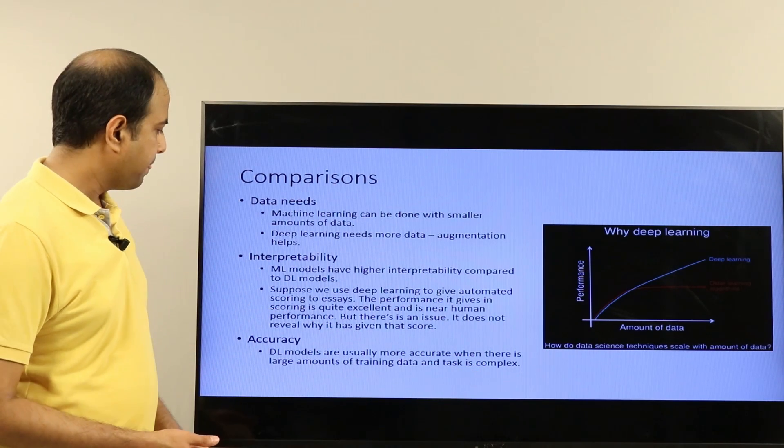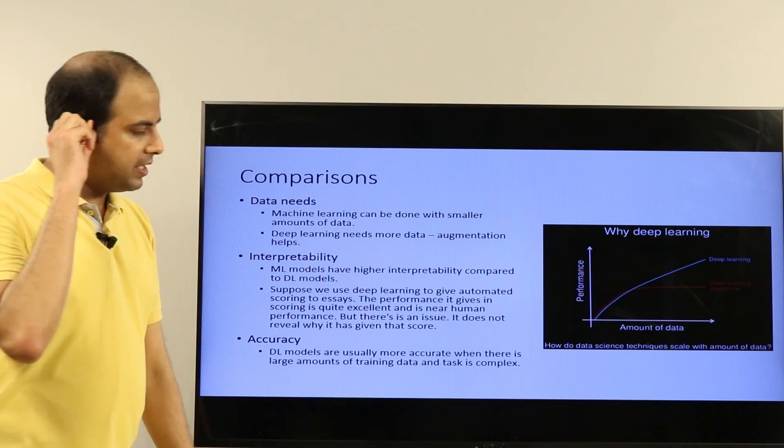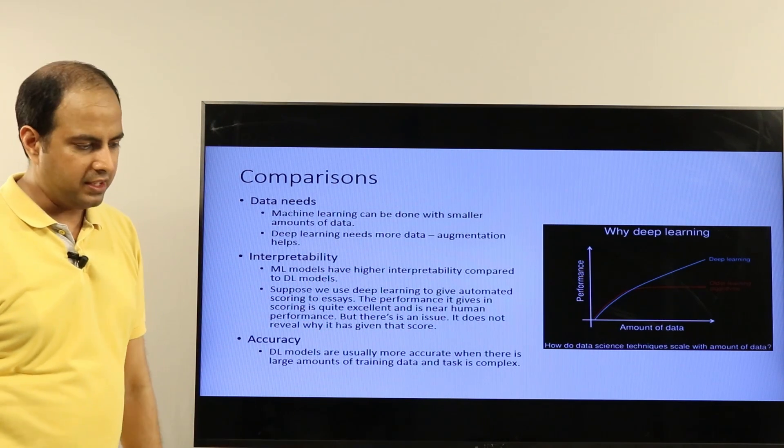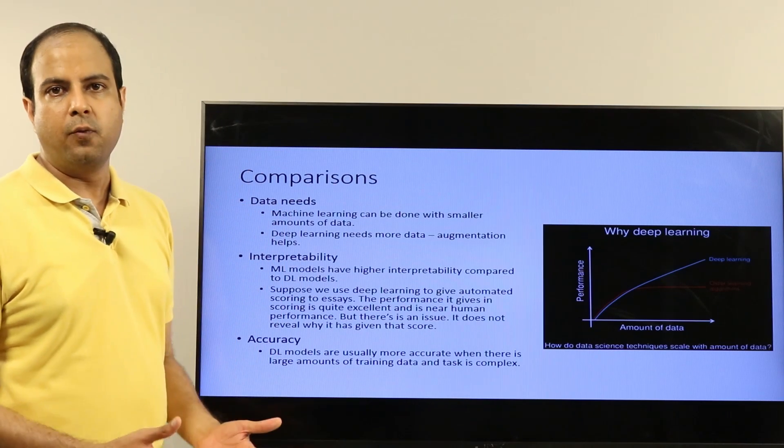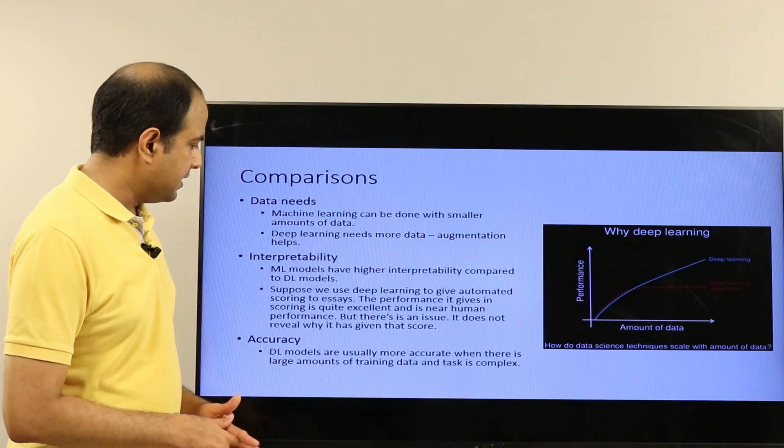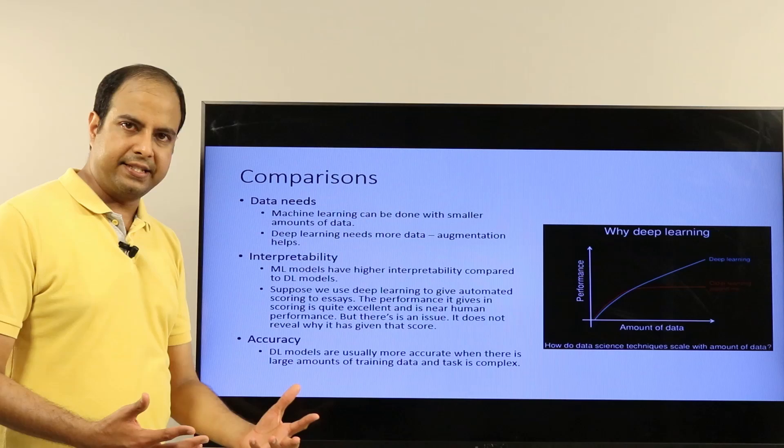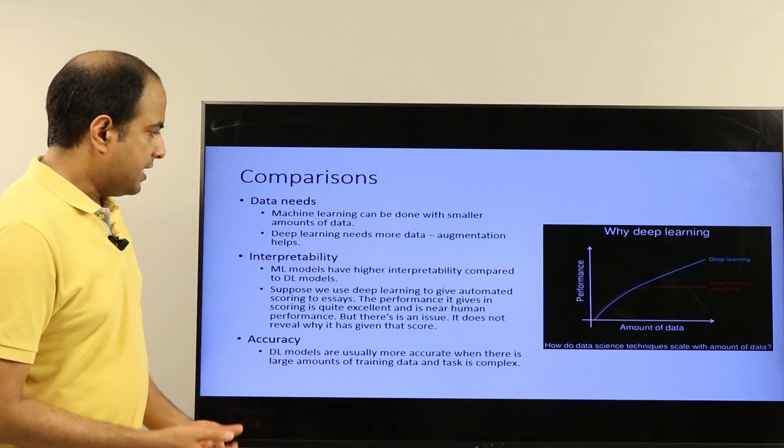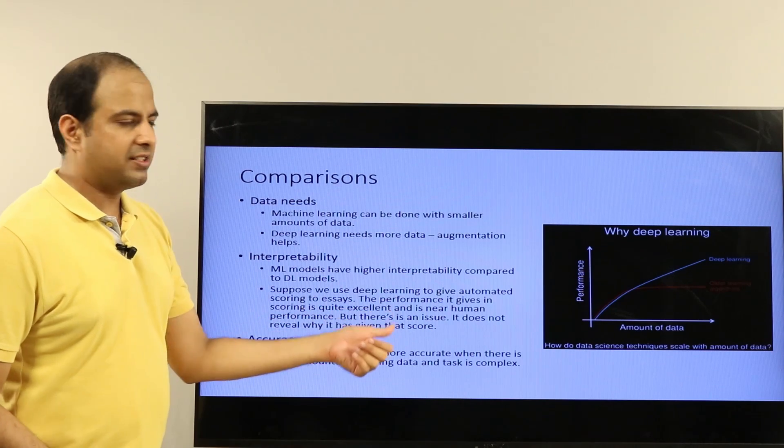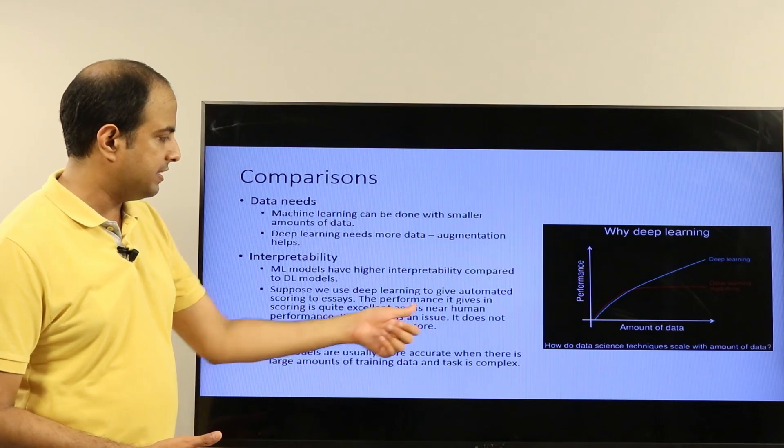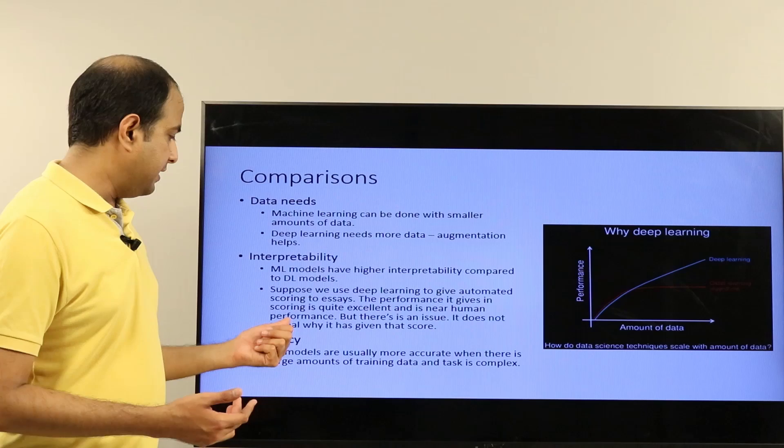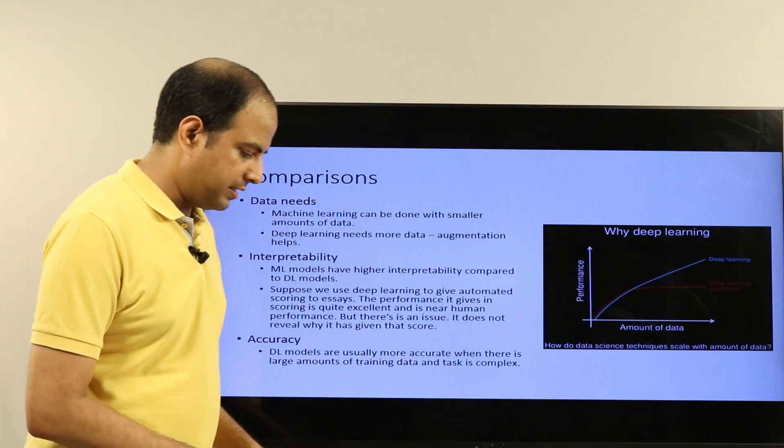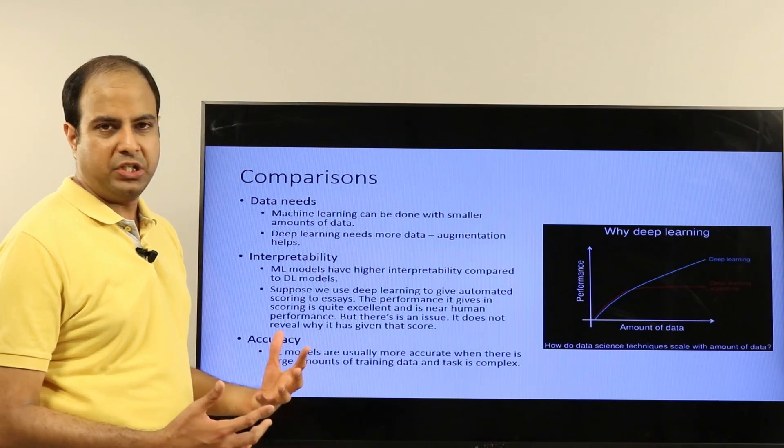Regarding interpretability: ML models usually have higher interpretability compared with deep learning models. Interpretability is very important—people want to know why a particular decision was made. For example, suppose we're deploying a model to give automated scoring to essays. Students write essays and you want to automatically score them using deep learning models. The performance in scoring is quite excellent and near human performance, but there's an issue: it doesn't really reveal why it has given that score. It doesn't tell you what mistakes the student made.